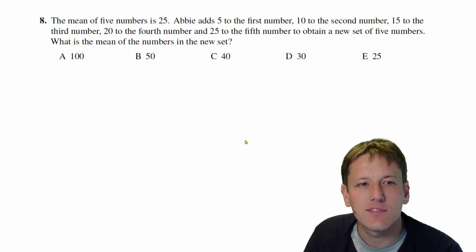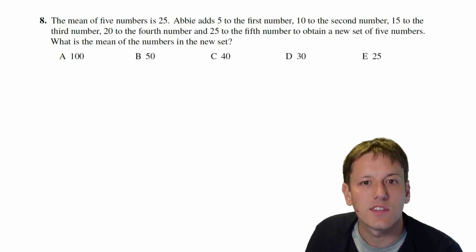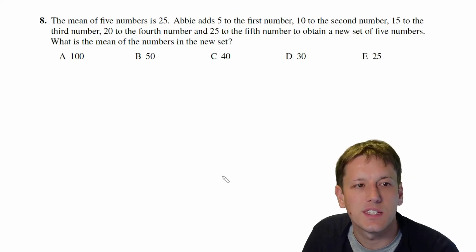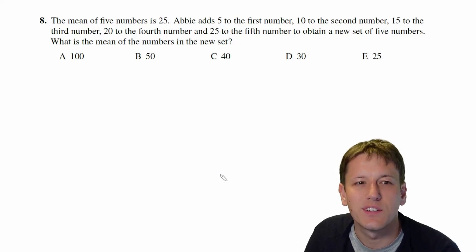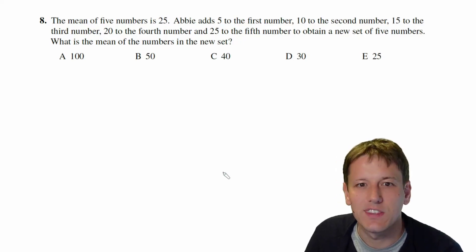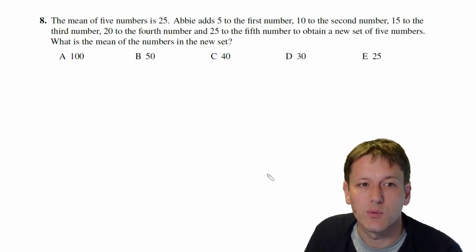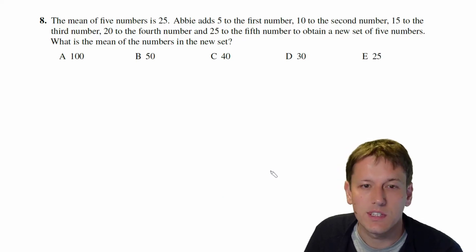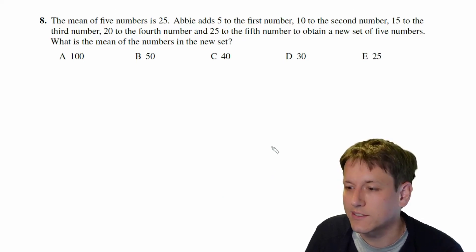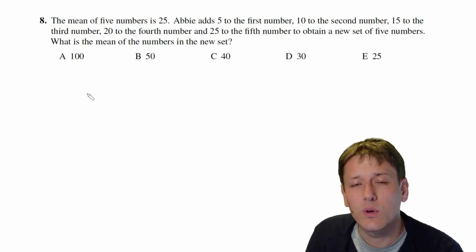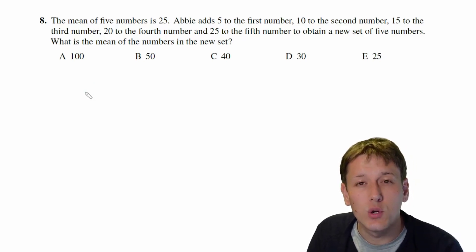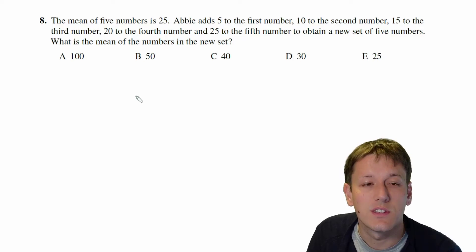In question 8, the mean of five numbers is 25. Abby adds 5 to the first number, 10 to the second, 15 to the third, 20 to the fourth, and 25 to the fifth to obtain a new set of five numbers. What is the mean of the numbers in the new set?